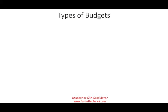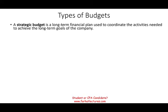Now we're going to look at different types of budgets. The first type is a strategic budget — a long-term financial plan, sometimes covering three to ten years. It's for strategic, long-term planning, not day-to-day operations. Next, we have the operational budget, which is a short-term financial plan used to coordinate the activities for the short-term goals of the company, such as making a profit and operating the business on a day-to-day basis.